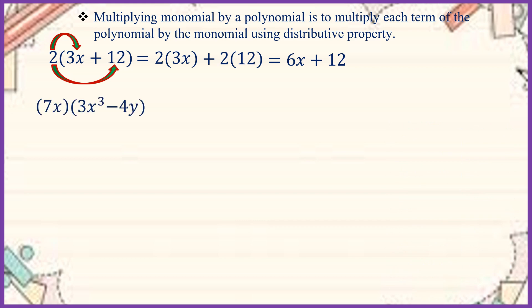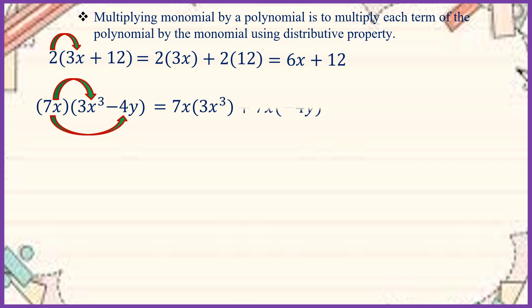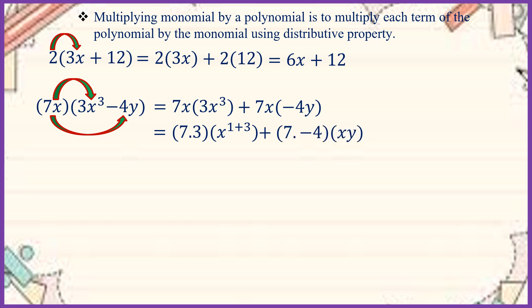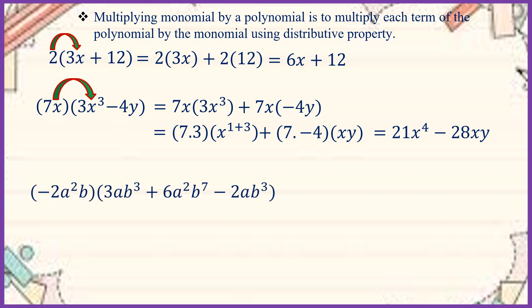Supposing we have 7x times the quantity 3x to the third minus 4y. We are going to distribute 7x inside the parenthesis. So we will be getting 7x times 3x to the third plus 7x times negative 4y. Simplifying, we get 21x to the fourth minus 28xy.